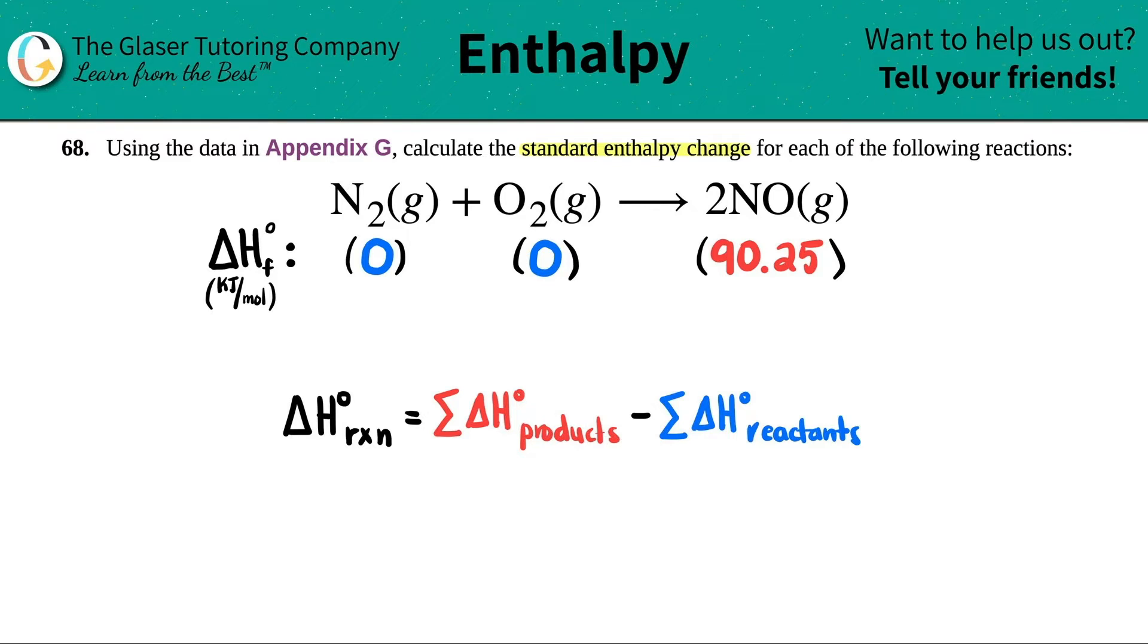In this case, since there was no number in front of the N2, that technically means that I have one N2. So I'll multiply this by one. The same thing goes for the O2, there was one of them, I'm going to multiply by one. And then here I see that I have two of them, so I have to multiply this number that I found in the appendix times two.